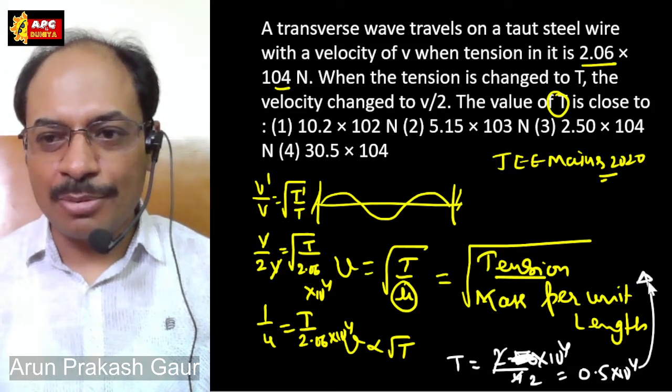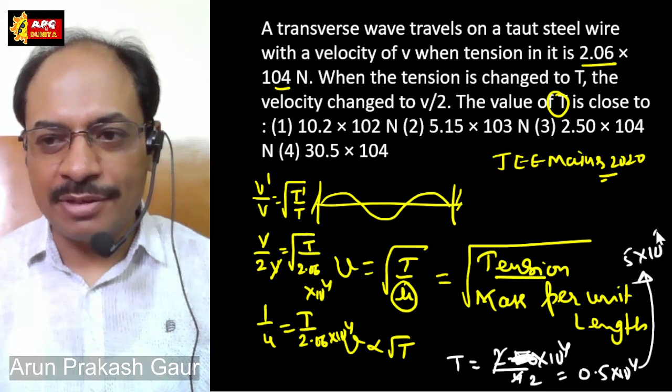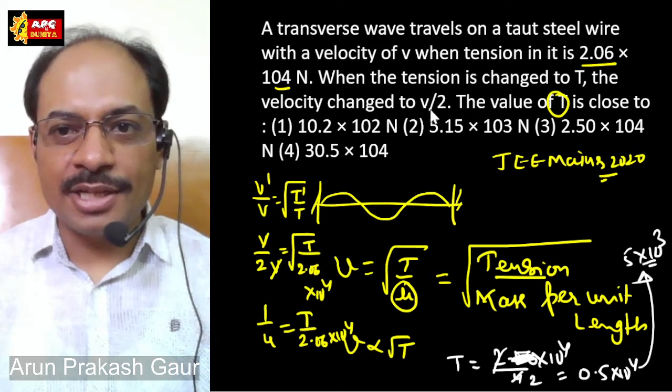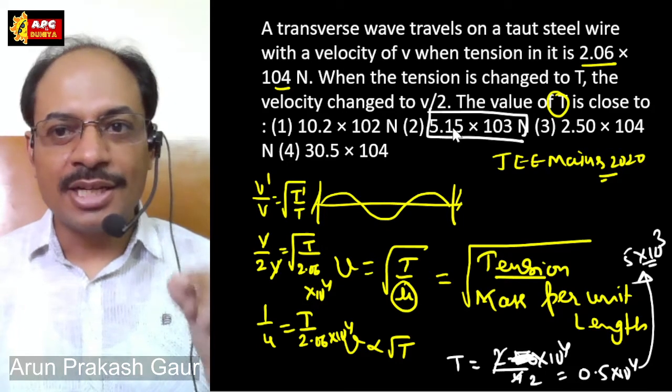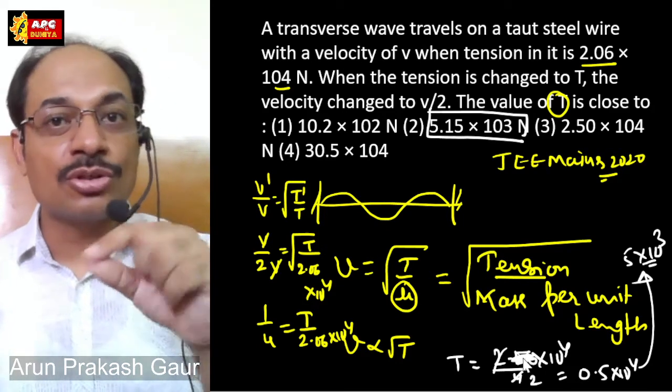This 0.5 into 10 to the power 4 means when you look at options, it will be approximately 5 into 10 to the power 3. Look, the closest one is 5.15 into 10 to the power 3. Because we neglected 0.06, if we hadn't neglected it, we would get the exact answer.